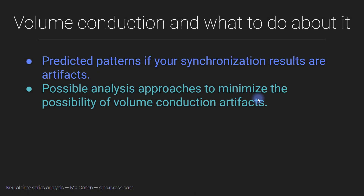In this video I'm going to talk more about volume conduction. First I will describe what are the predicted patterns of results if your synchronization is actually determined by a volume conduction artifact, and then I will describe a couple of different analysis approaches — I think there might be 10 of them — that will minimize the possibility or prevent volume conduction artifacts from happening. Some of these are preventative measures and some are post hoc measures that you can inspect your data with to see if volume conduction might be accounting for your connectivity results.